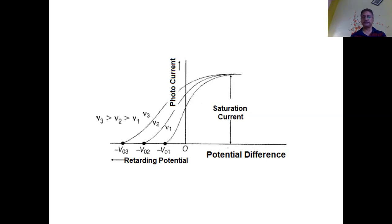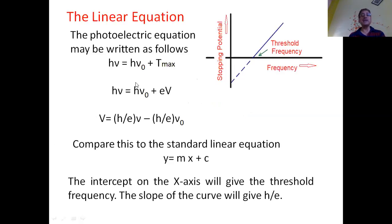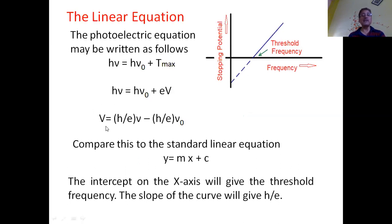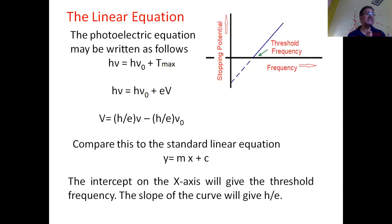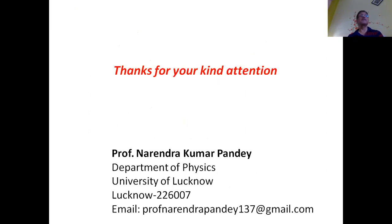From Einstein's relation hν = hν₀ + T_max, and since T_max = eV (where V is the stopping potential), we can write: V = (h/e)ν − (h/e)ν₀. Plotting stopping potential V against frequency ν gives a straight line. Comparing with the standard linear equation, the slope h/e gives a measurement of Planck's constant, and the x-intercept gives the threshold frequency, as seen from the graph. We have thus been able to explain the photoelectric effect on the basis of quantum theory. Thank you for your kind attention.